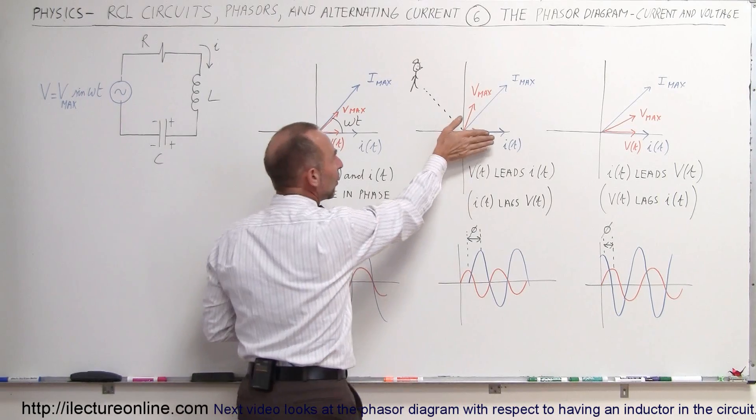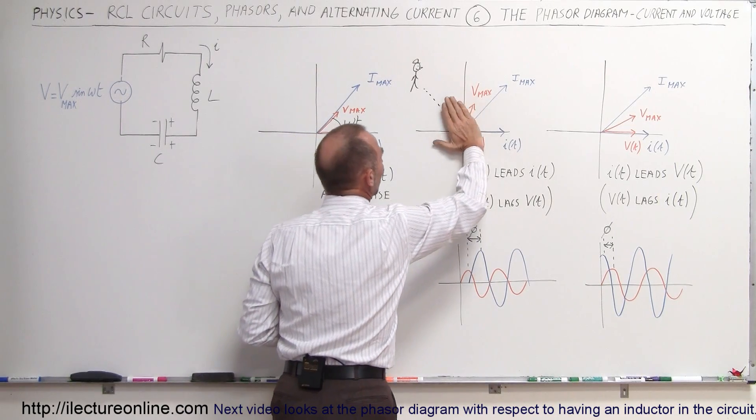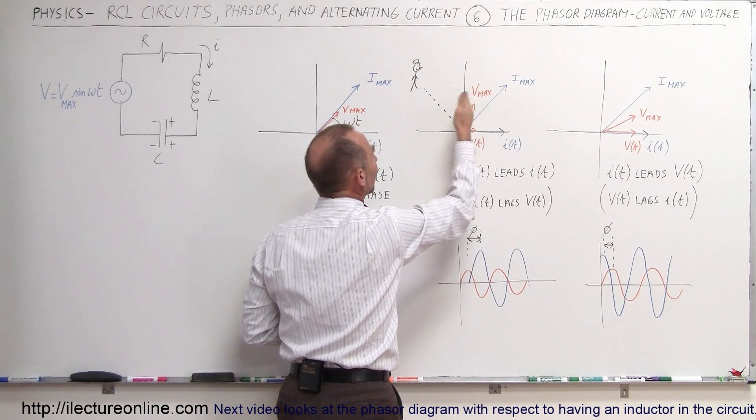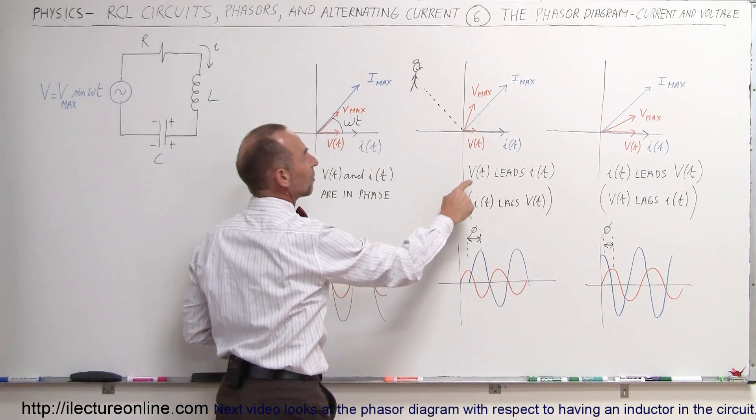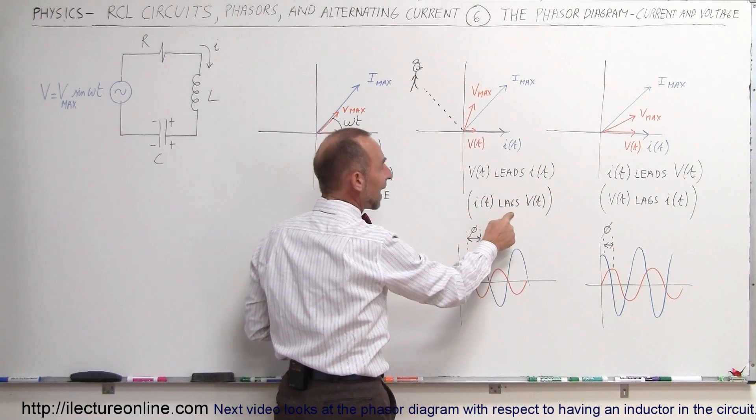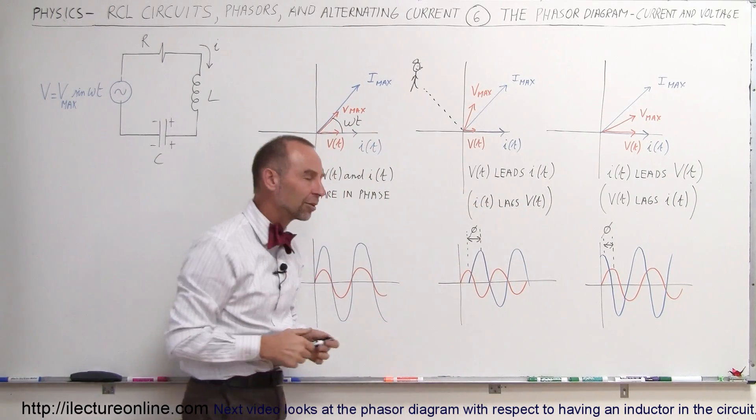That's how we look at a phasor diagram. We know that those phases are going to be rotating around in a counterclockwise direction, so whatever comes there first, that's leading. So we can say that the voltage is leading the current, or we can say that the current is lagging the voltage.